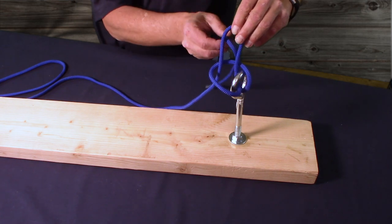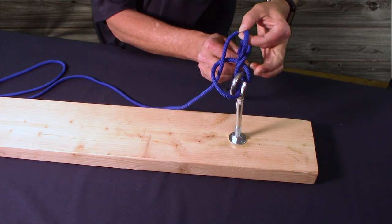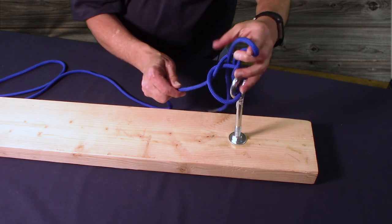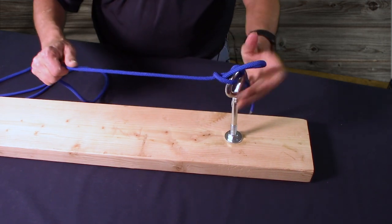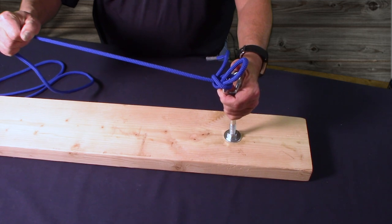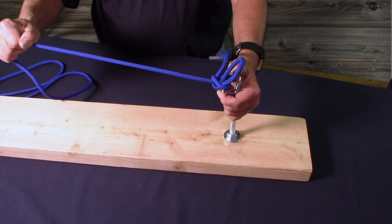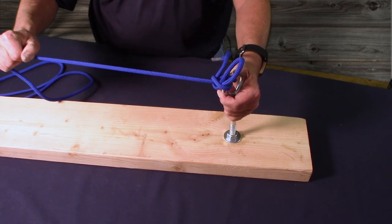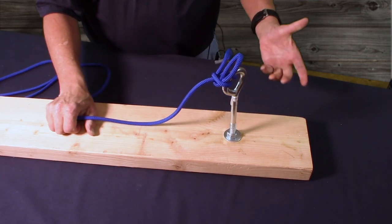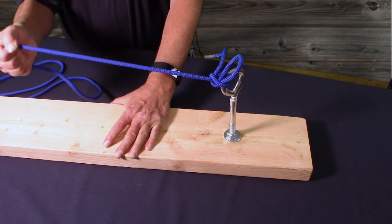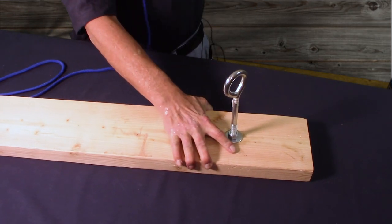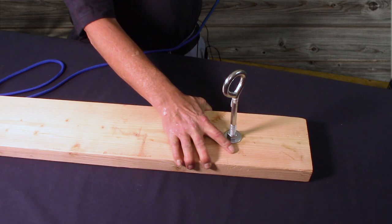Now that we've got that loop, we're going to pull our working end loop, pull a loop through that one. Not all the way, just the loop. Then we're going to pull on the standing end. This would be as if you had something like a horse pulling back against it or a dog the size of a horse like mine. So you've got a knot that holds secure. It's not going anywhere, but when you want to release it, all you have to do is pull. And it's free.